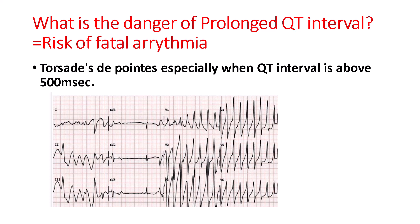What causes prolonged QT interval? Drugs, including antiarrhythmics like class 1 and class 3 medications, antibiotics like fluoroquinolones, macrolides, and azoles, and different antipsychotics and antidepressants. Electrolyte abnormalities including hypocalcemia, hypomagnesemia, and hypokalemia. Heart diseases like coronary artery disease and cardiomyopathies. Autonomic dysfunction due to conditions like stroke and carotid endarterectomy. And congenital channelopathies.